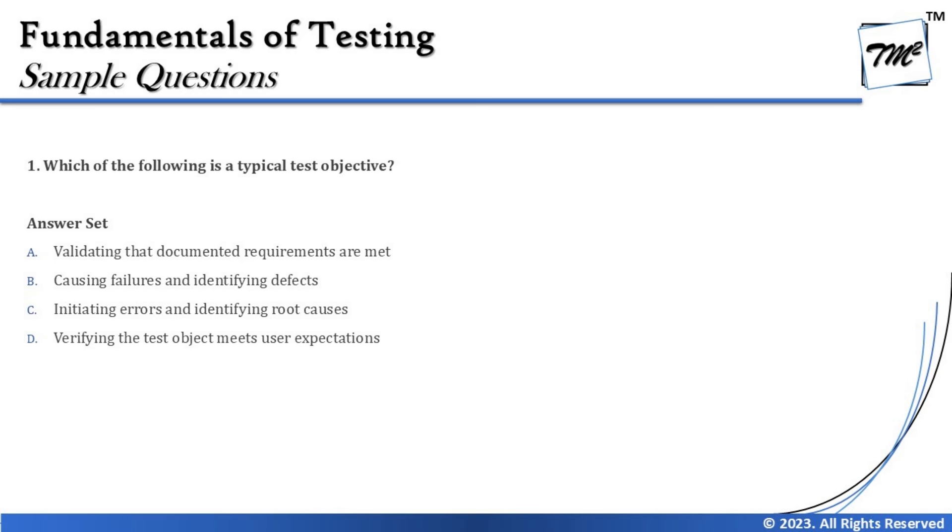To get started, the very first question coming from Chapter 1 — Fundamentals of Testing — asks: which of the following is a typical test objective? This is a K1 level question, so there's nothing complex to worry about, but it is context-driven, so let's go through the options carefully to understand what the right answer is.